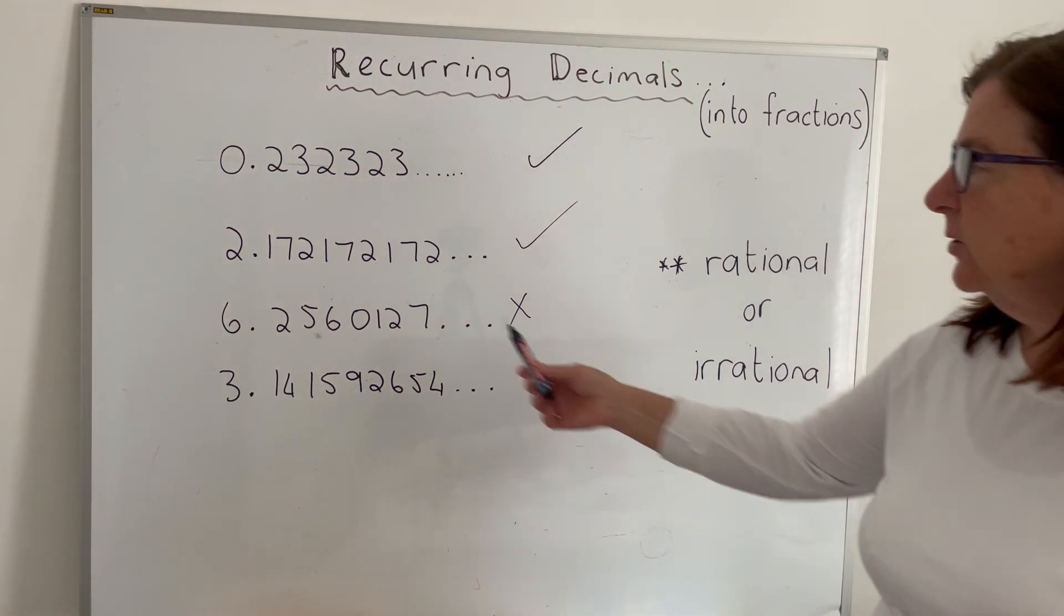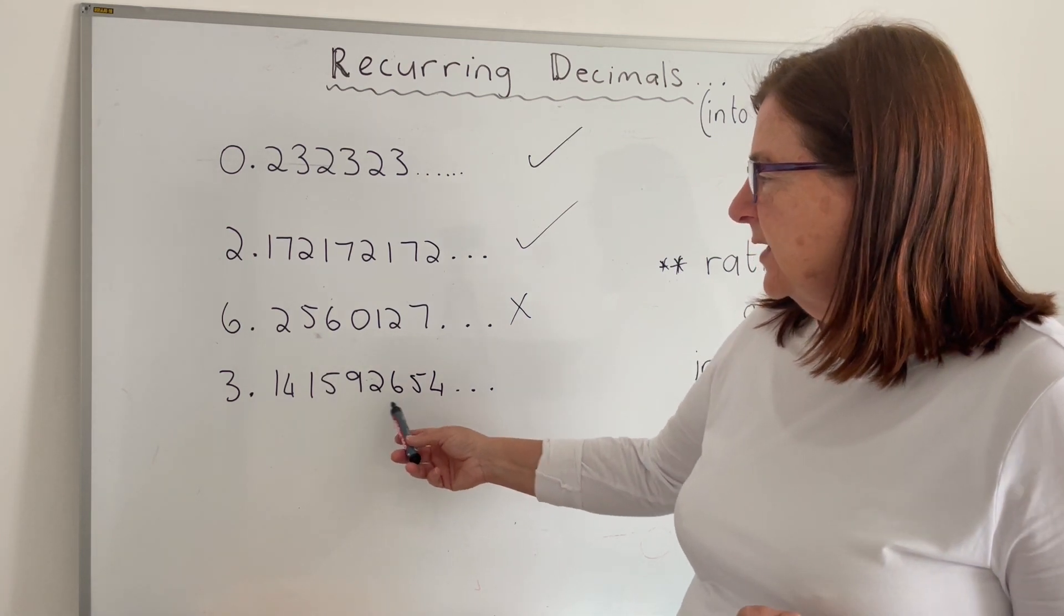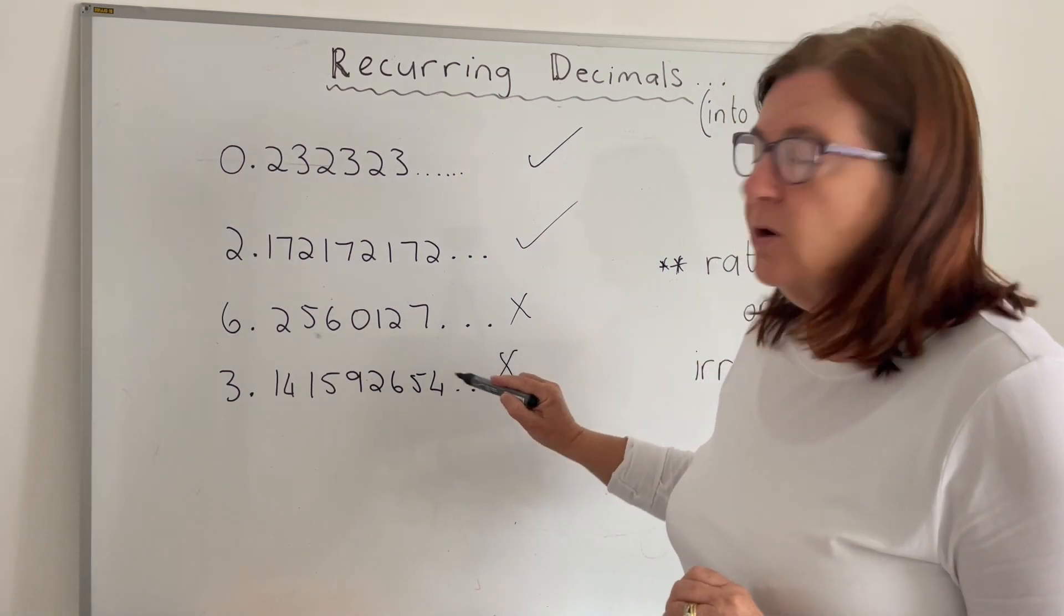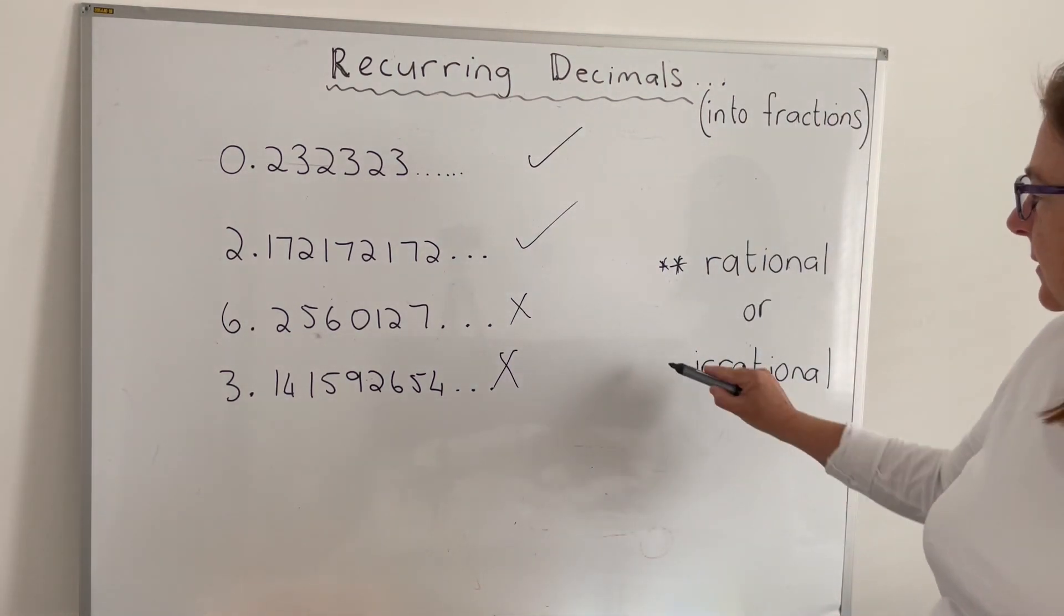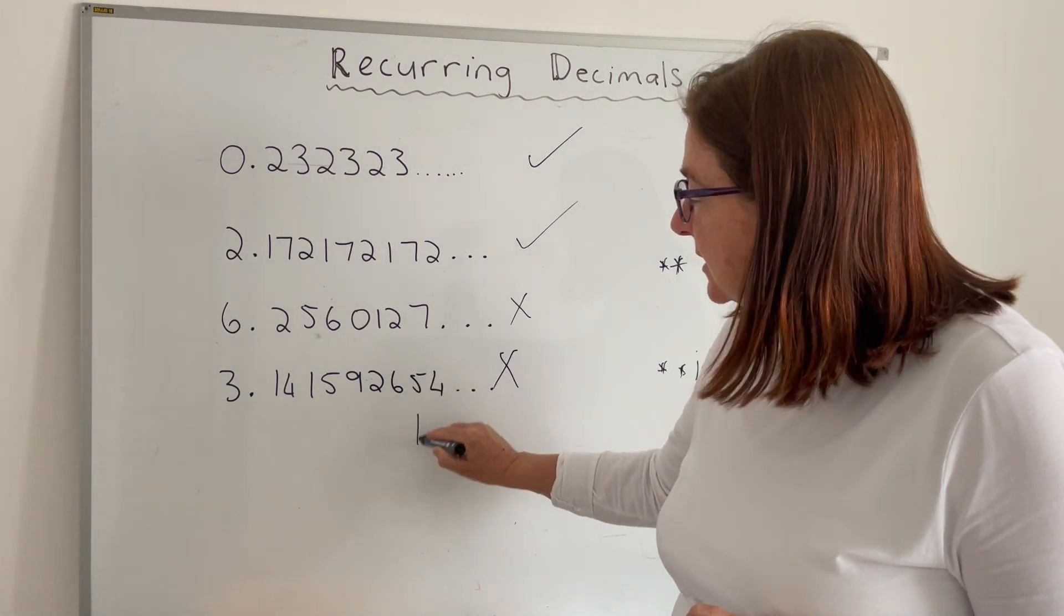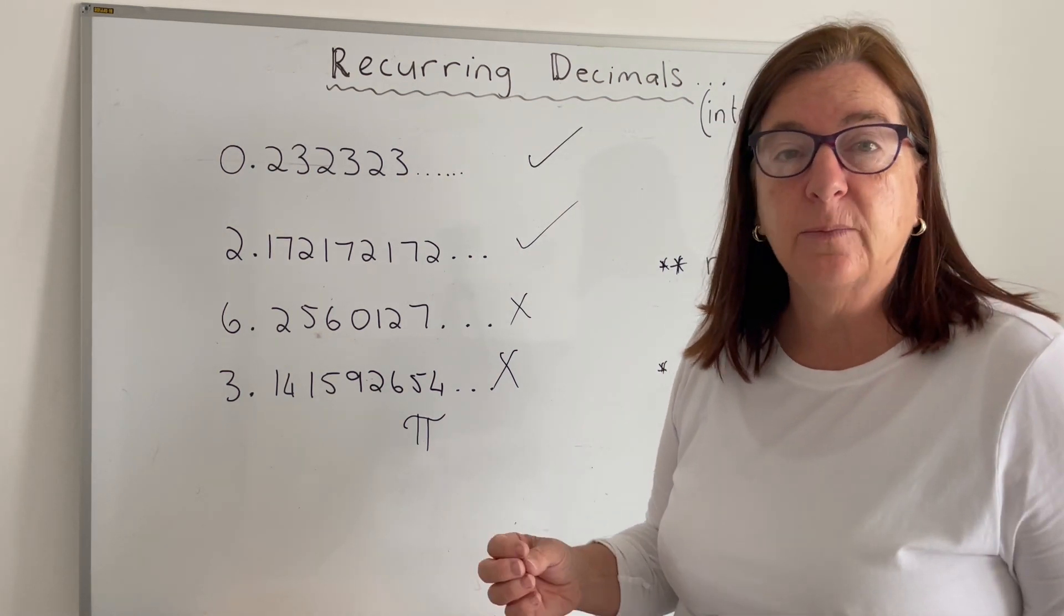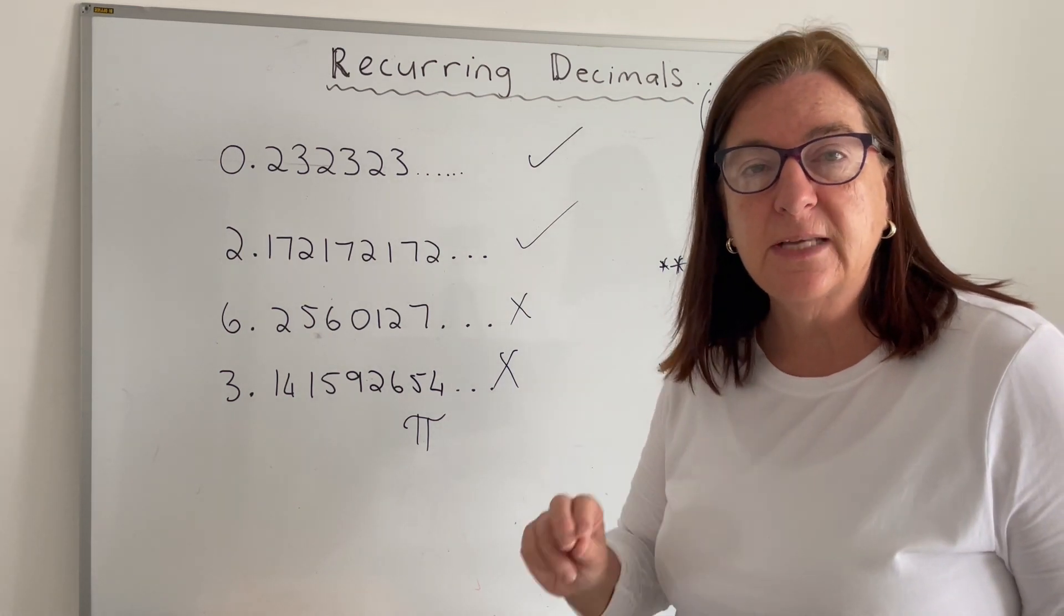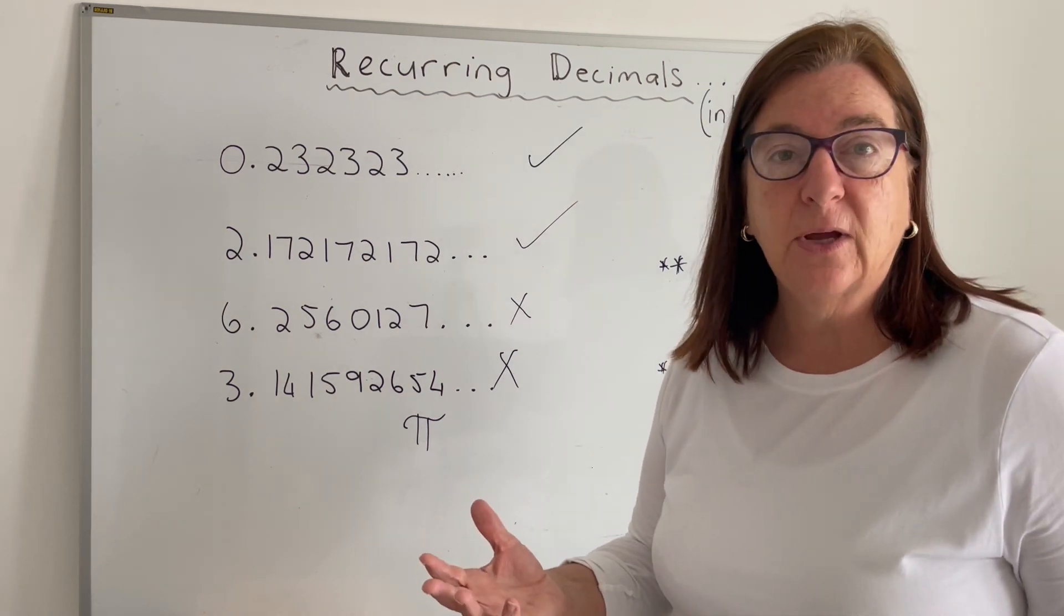Then the next number, 3.1415926, there's no pattern there, it doesn't recur. So therefore that also cannot be converted into a fraction. Therefore it is irrational. To be different, if you notice, that actually is pi. Pi is a constant number but it's irrational because it can't be converted to a fraction. The closest approximation is 22 over 7 and sometimes we use that, but it's an irrational number.